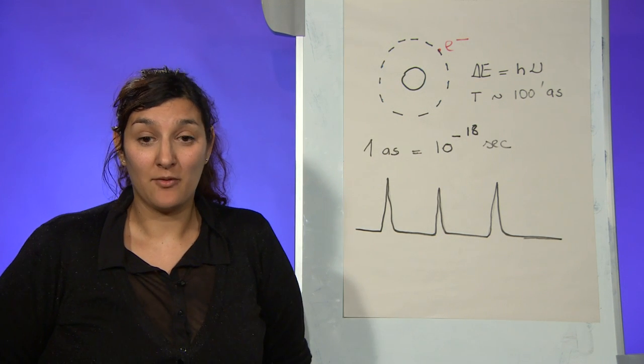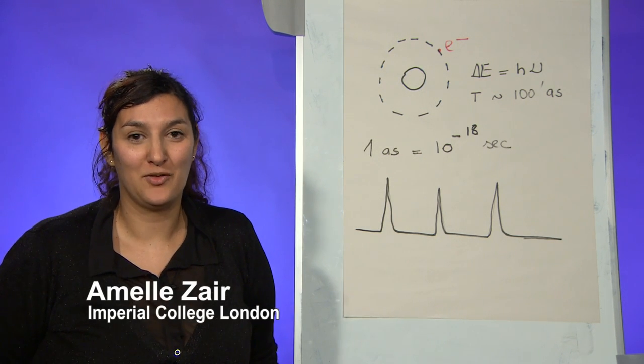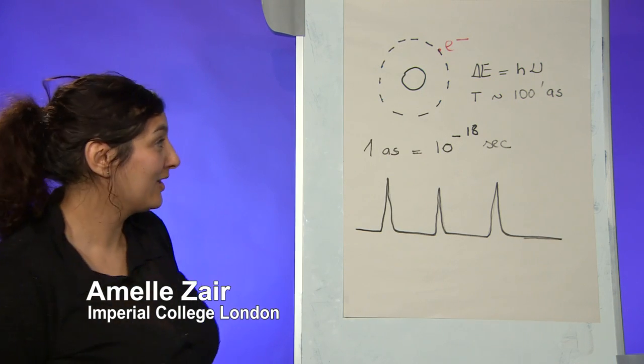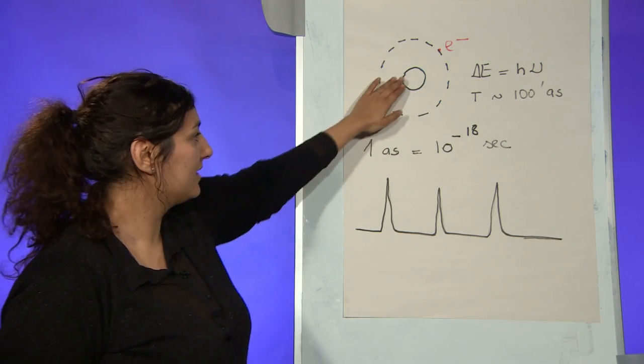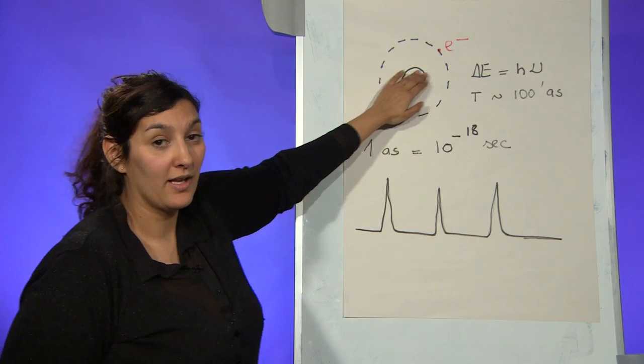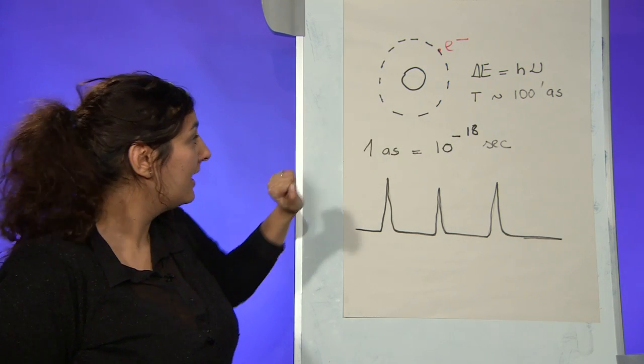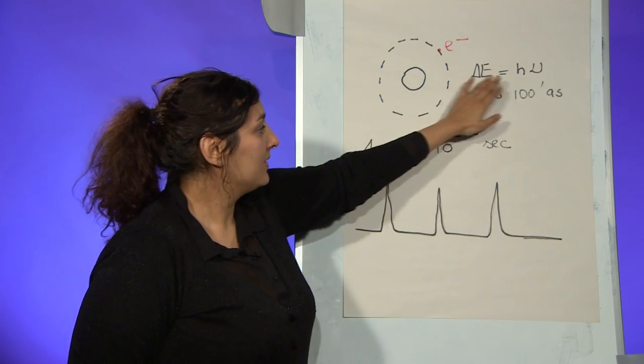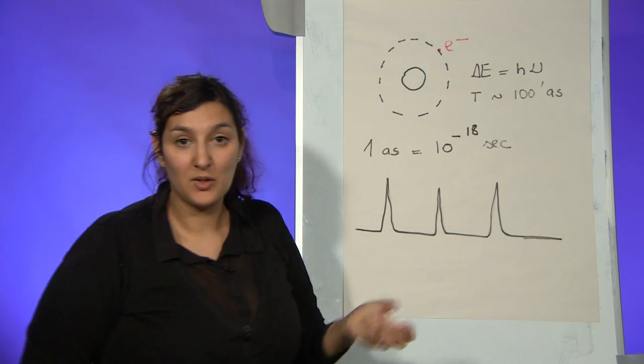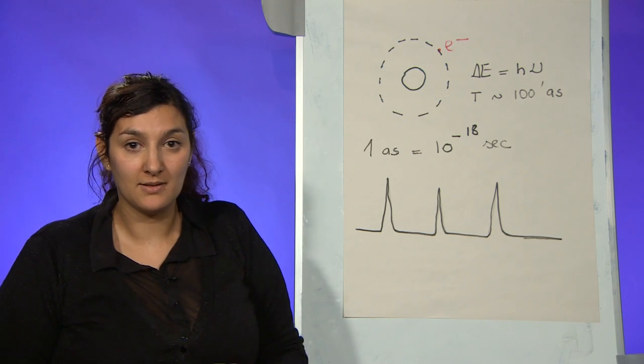So in order to answer this question, we have first to define what is the time scale of an electron in an atom. And for that we can use the model of a nitrogen atom by Bohr, where you see here a positively charged core and an electron moving around this core. To have an idea about the time scale of this electron moving around the core, we can calculate it with this equation, and we end up with a period of time of about a hundredth of an attosecond.